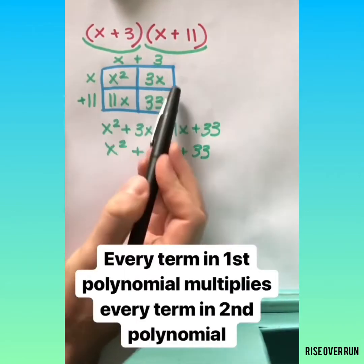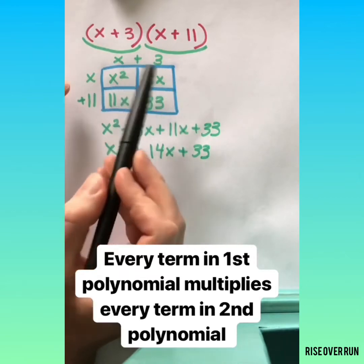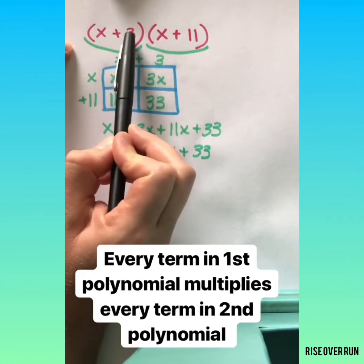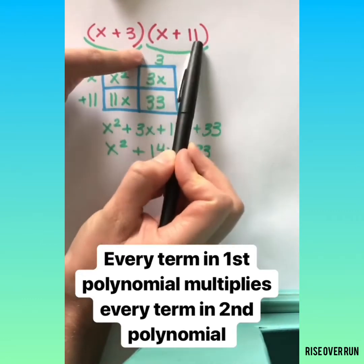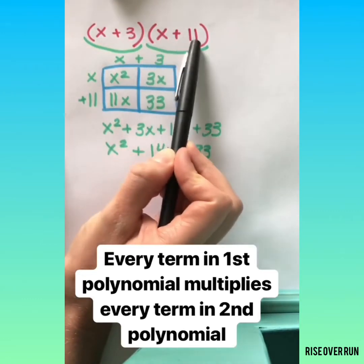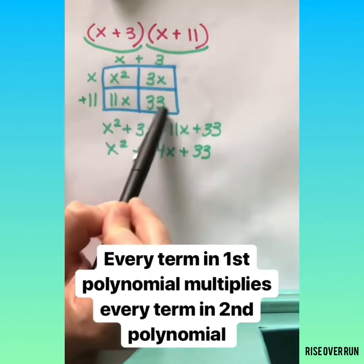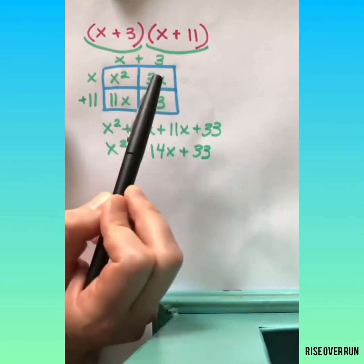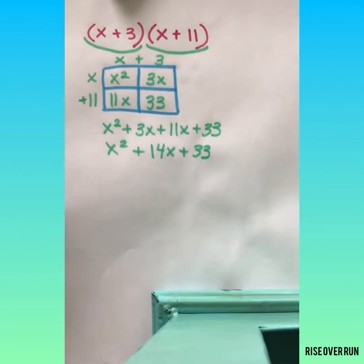An area model or the box method helps you remember that every term in this first polynomial has to multiply every term in the second polynomial. It not only keeps your work nice and neat, but it also has a real meaning. The reason it works is because that's how area is calculated.